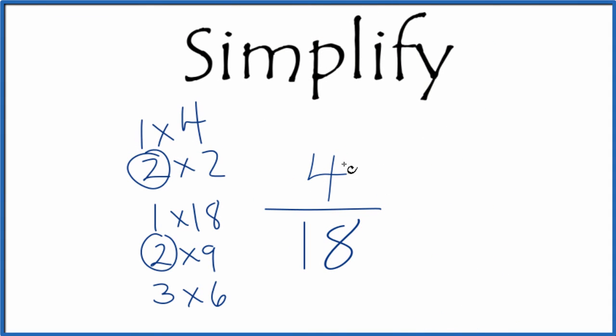So we divide the numerator here by 2. 4 divided by 2, that's just 2. And 18 divided by 2, that's 9. So we've simplified the fraction 4 eighteenths.